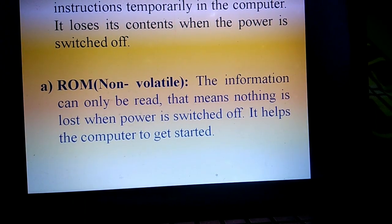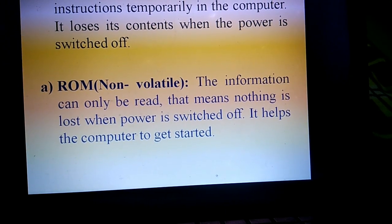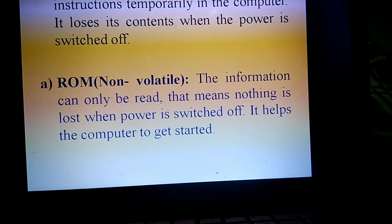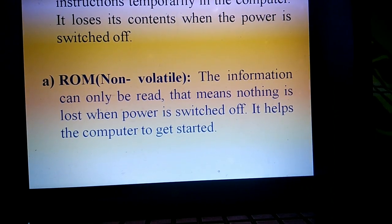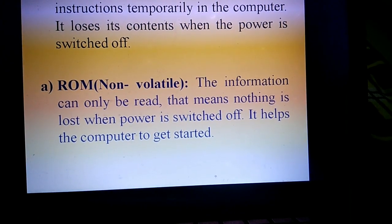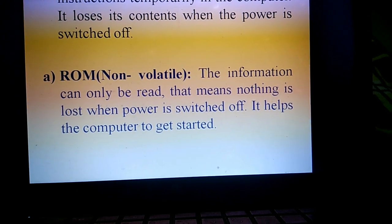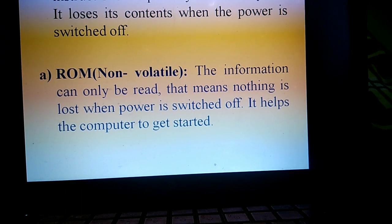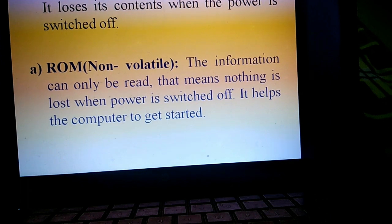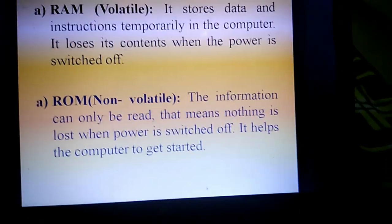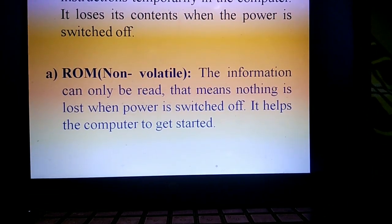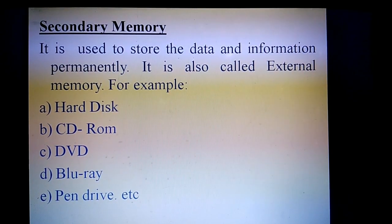ROM is Read-Only Memory, from which information can only be read. As the name suggests, the data on ROM chips cannot be modified — its contents are created at the time of manufacture and cannot be changed. RAM is called volatile memory and ROM is called non-volatile memory, meaning nothing is lost when power is switched off. It helps the computer to get started.